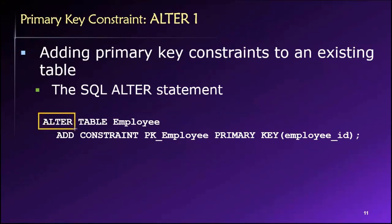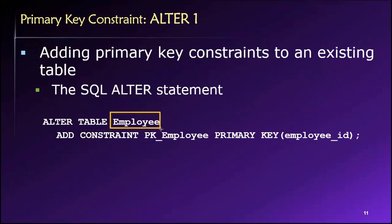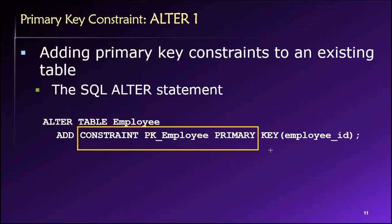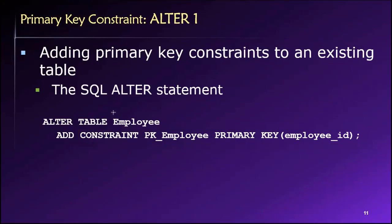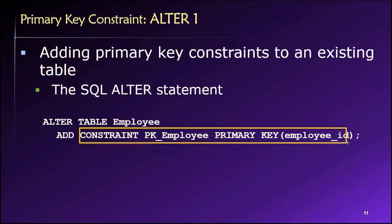Previously it was CREATE; in this case it's ALTER. The type of object that we want to alter — in this case, a table — and then the name of that object. We're already familiar with this syntax; there's nothing different here. We use exactly the same thing when we want to establish a primary key in a CREATE TABLE statement. The only difference is that we're adding it after the fact.